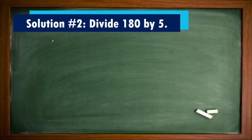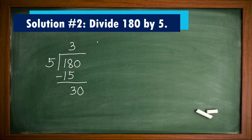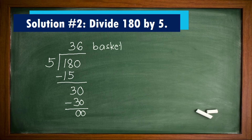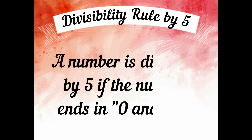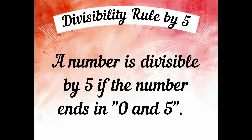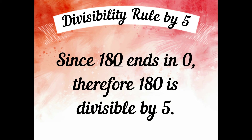Solution number 2: Divide 180 by 5. Using long division, 180 divided by 5 equals 36. The answer is 36 baskets per row. Divisibility rule: A number is divisible by 5 if the number ends in 0 or 5. Since 180 ends in 0, 180 is divisible by 5.